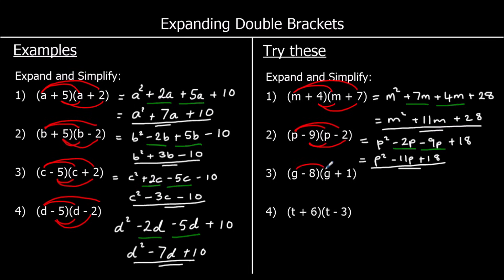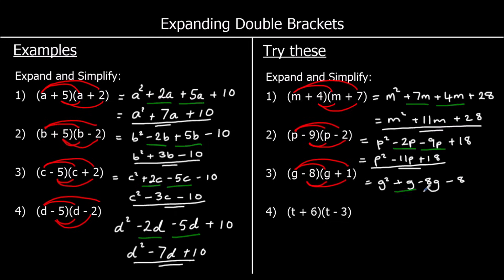Question 3: g times g is g squared. One times g is g. Negative eight times g is negative 8g. And negative eight times positive one is negative eight. Collecting like terms: 1g take away 8g is negative 7g, so we've got g squared minus 7g minus eight.